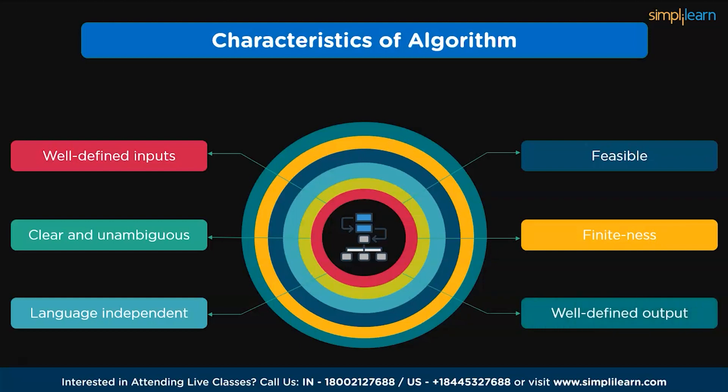Next, feasible. When a problem can be broken down into simple steps, it becomes feasible and easier to understand the logic. Next, finiteness. An algorithm must be finite, which means it must have a finite set of countable instructions to execute. Later, well-defined output. The generated output must be well-defined and clear and it must produce at least one output.